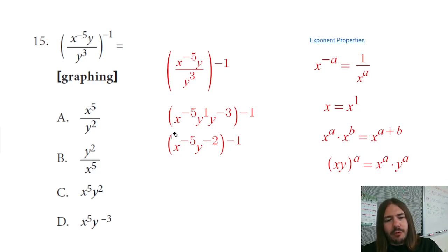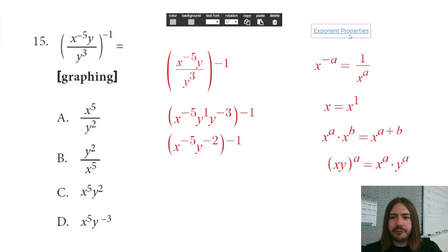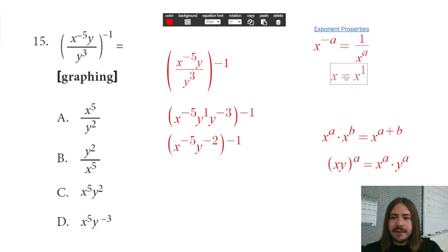Now, if I want to raise each of these to the negative first power, which is what I want to do here, I basically want to kind of distribute this negative one to both of these. I actually need to know another property, and I know this is getting kind of ridiculous with the number of properties I'm listing here, but that's just the way it is. I'd rather give you more information than not enough.